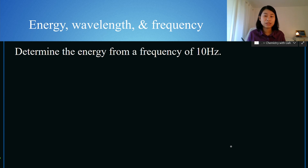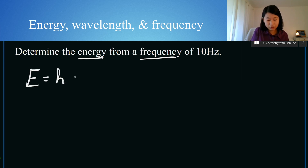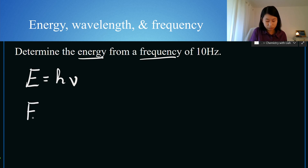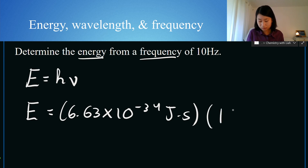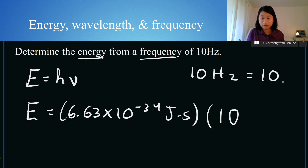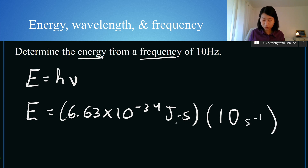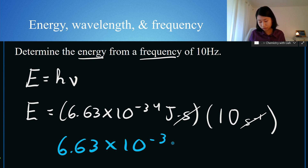Determine the energy from a frequency of 10 Hertz. Dealing with energy and frequency, we use E equals Planck's constant times nu. We plug in Planck's constant and then our frequency of 10 Hertz, which is equal to 10 cycles per second, or 10 to the negative one cycles per second. Seconds will cancel out and we are left with joules. When you do this multiplication, you get 6.63 times 10 to the negative 33 joules.